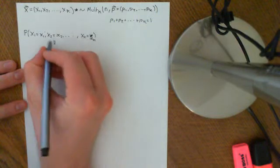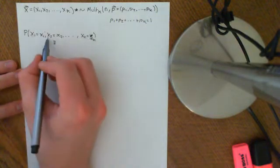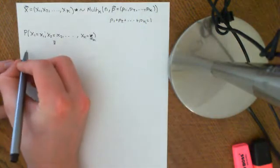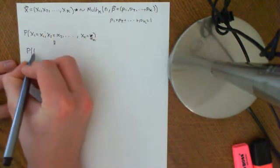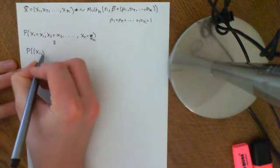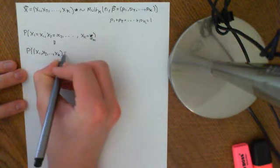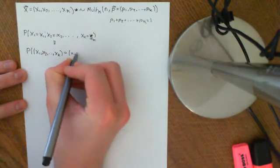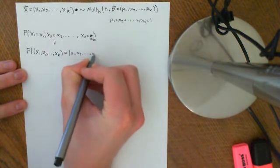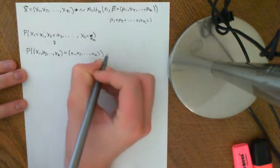So, another way of writing that, that's in terms of writing it in terms of an intersection of all the individual random variables, but we could write this as the probability that the whole vector, x1, x2, all the way up to xk, is equal to this little vector, x1, little x1, little x2, all the way up to little xk, so that's another way you could write that.